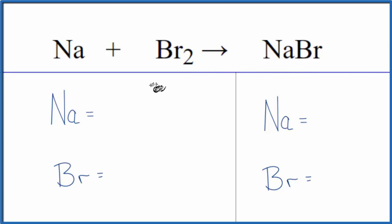First thing we need to do to balance equations, count up the atoms on each side. We have one sodium atom, two bromine atoms. Products, one sodium, and just one bromine. So the bromine atoms, they're not balanced.